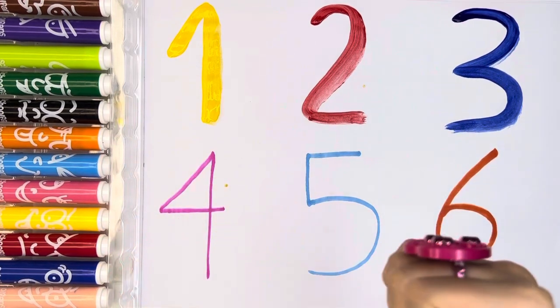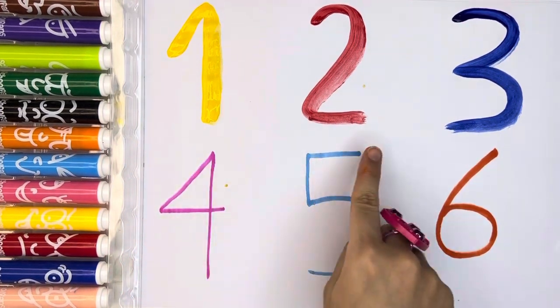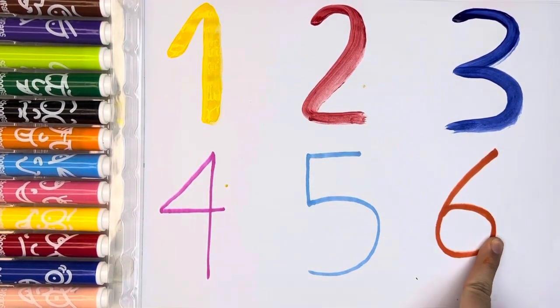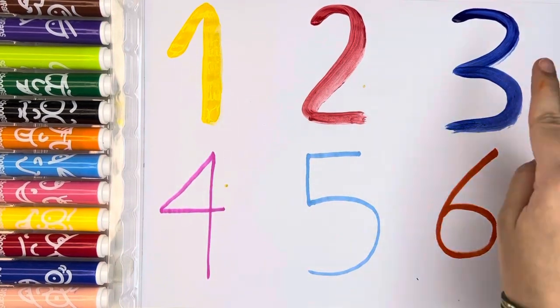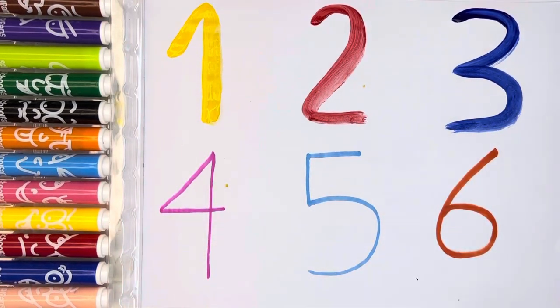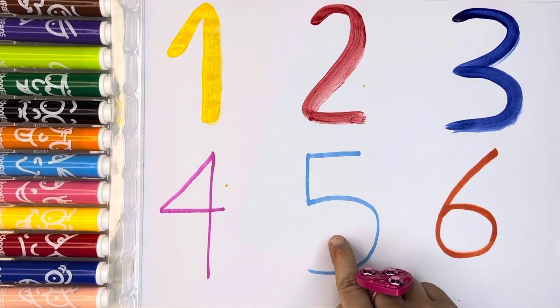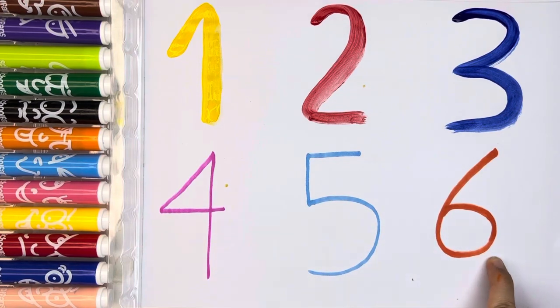We have six numbers. Number one to number six. Yellow number one. Red number two. Blue number three. Pink number four. Sky blue number five. Orange number six.